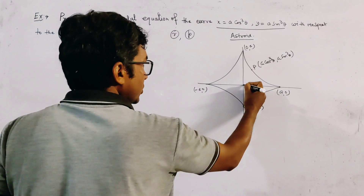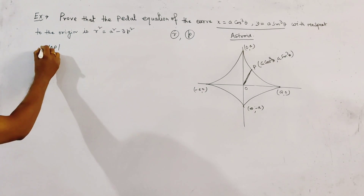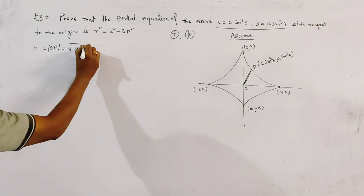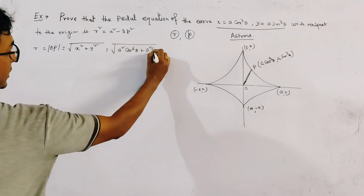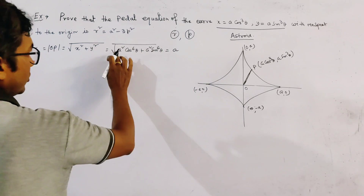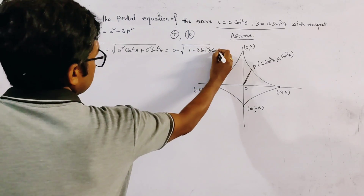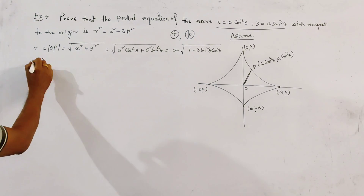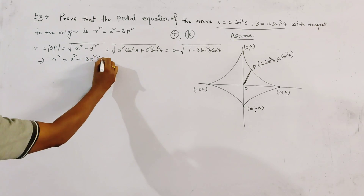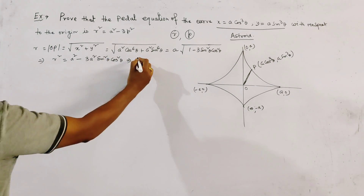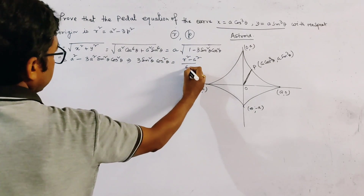R is the distance from the origin to the general point on the curve, that is OP. We find |OP| = R = √(x² + y²) = √(a²·cos⁶θ + a²·sin⁶θ). Taking a common from under the root, and simplifying using the identity for sin⁶θ + cos⁶θ, we get 3·sin²θ·cos²θ = (a² − R²) / a².